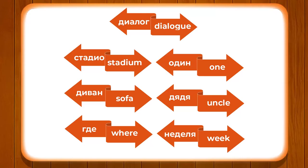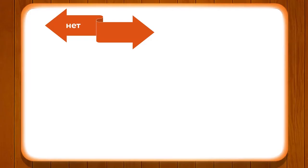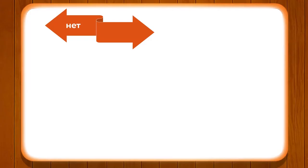If you pay attention to this list, we have DYADYA, and from the previous part we had TYOTYA. So TYOTYA means aunt and DYADYA means uncle. You can add these to your list of relatives and use them when talking about your family.